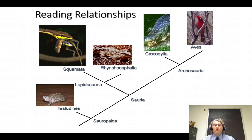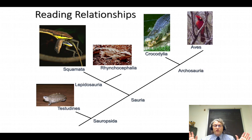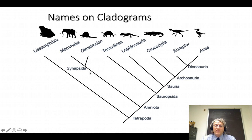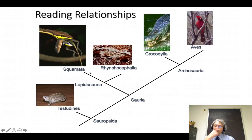How do you read these relationships? The name at a node includes the entire part of the tree that comes from that node. So Sauropsida refers to the entire branch that includes Testudinata, Lepidosauria, Crocodilia, Eoraptor, and Aves. Amniota refers to all of that — Sauropsida — plus the other branch, Synapsida.